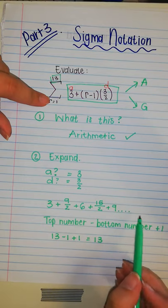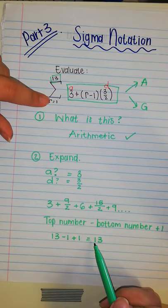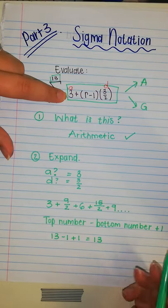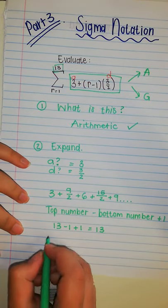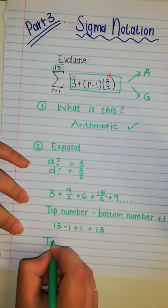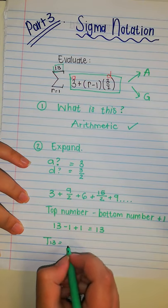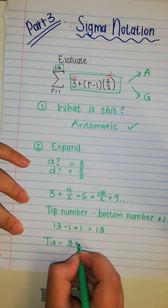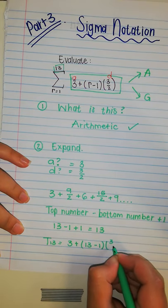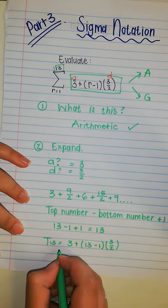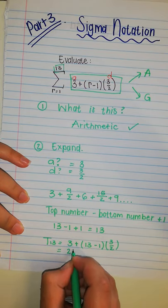Now, to get my final, my last term, I'm going to substitute it into my sequence formula. So, therefore, I'm going to say t13 is equal to three plus 13 minus one times three over two. And my final answer will be 21.